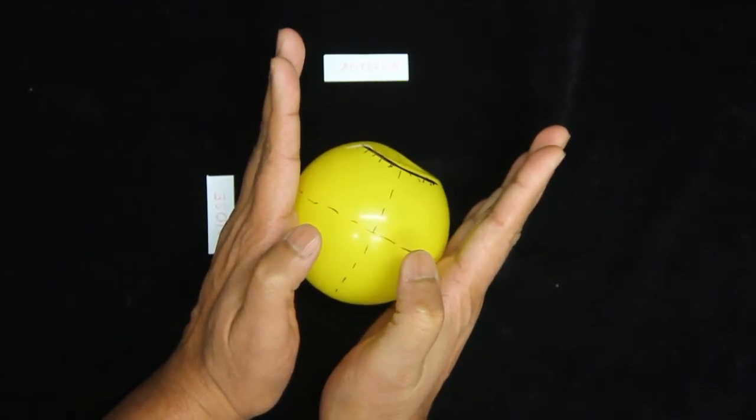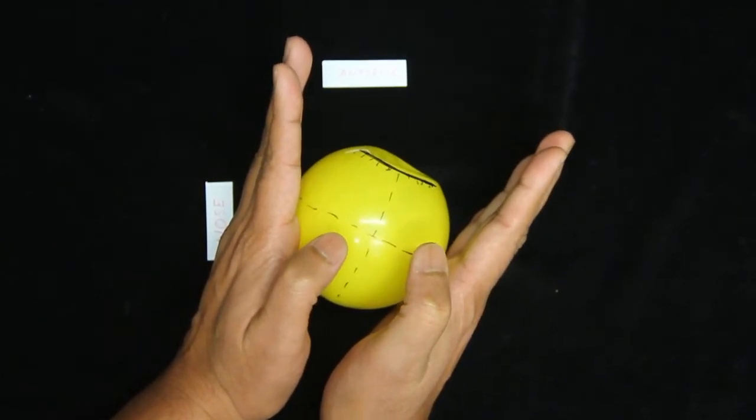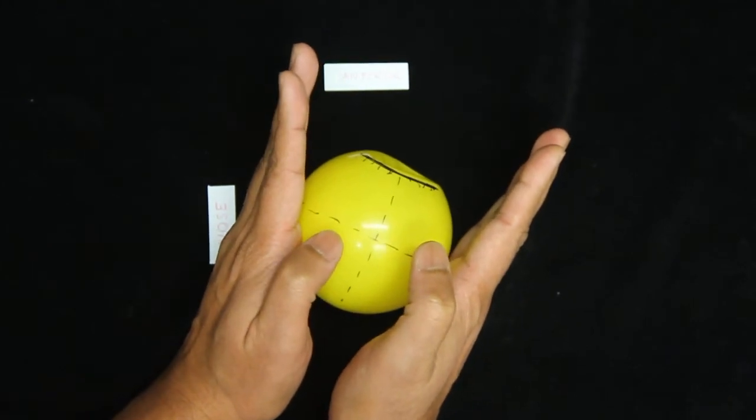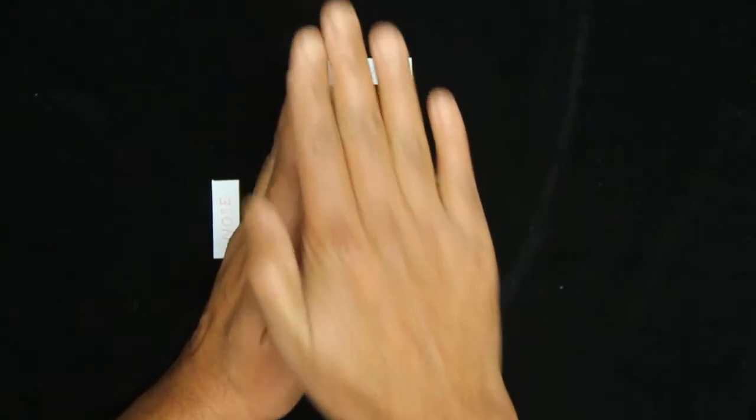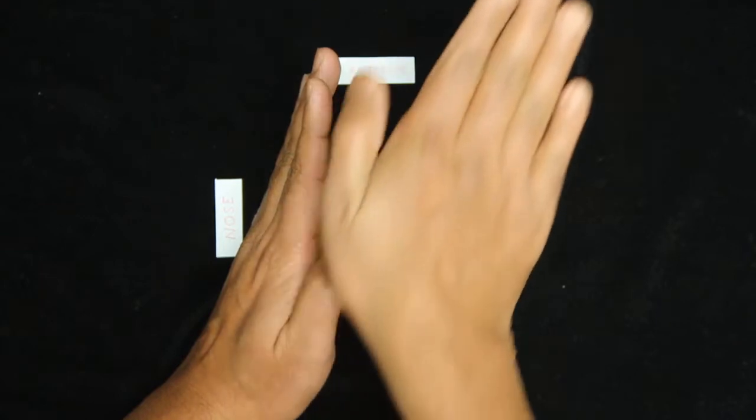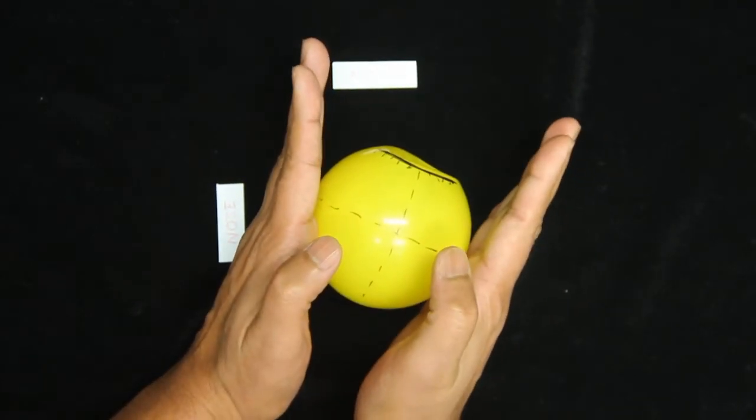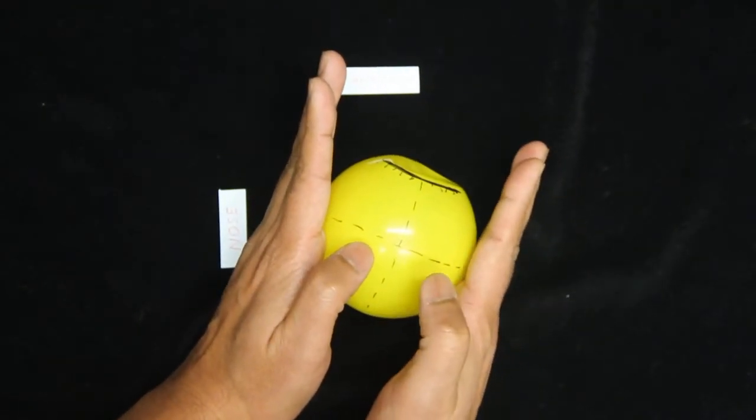So all the recti muscles we say are not facing anteriorly, but they are more or less facing sideways. This is about the orbital axis, but if you see the visual axis, because we have a straight vision, our eyeball is supposed to be placed like this.